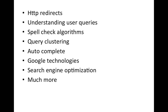Spell check algorithms are a really important topic — a search engine that can detect spelling mistakes can provide better results and also notify users. Query clustering is another deep topic we will cover. We will also learn about auto completion and how to make it really fast. Then we will learn about Google technologies like Google File System, Google BigTable, and MapReduce, which are very helpful if you are planning a career in computer science.